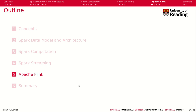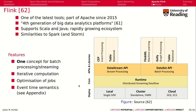Let's talk now about Apache Flink, which is another tool. It's in fact one of the latest tools available, part of the Apache since 2015. It's the fourth generation of big data analytic platforms, so a newer generation than Spark.